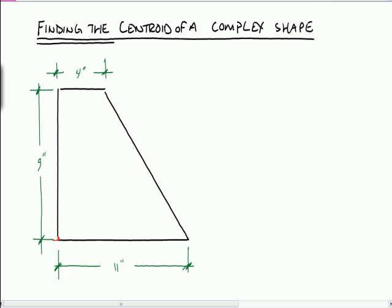For instance, in our complex shape, our complex shape is made up of a rectangle here, and a triangle here. And so what we're going to do is break this down into two separate parts.